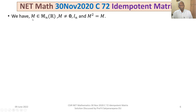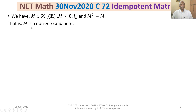We are given M belongs to the vector space of all n×n matrices with real entries, where M is not a zero matrix and M is not an identity matrix, but M² = M. This means M is an idempotent matrix — specifically, a non-zero, non-identity real idempotent matrix of order n.